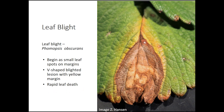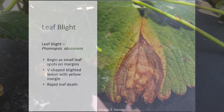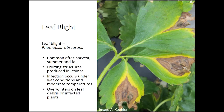Leaf blight, the third of the leaf diseases, begins as a small leaf spot on the margins of the leaf — usually on the tips — and then expands into a v-shaped blighted lesion with yellow margins. By 'blight' we usually mean quick death, so this leaf disease causes rapid death of strawberry leaves. This disease is most common after harvest, so in summer and fall, and again more common in a perennial system.